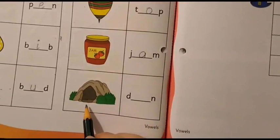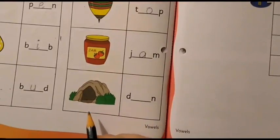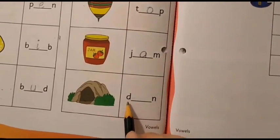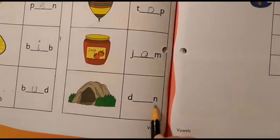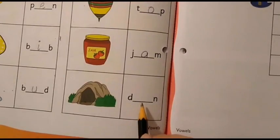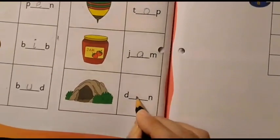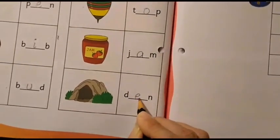Then what is this? This is a den. D. N. Den. D is given. N is given. Den. Eh. So, which letter says Eh? Yes. Which vowel? E. So, here we will write the letter E.